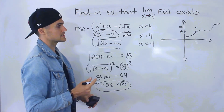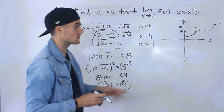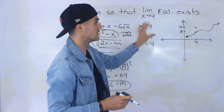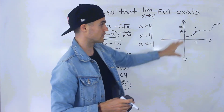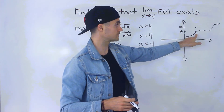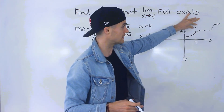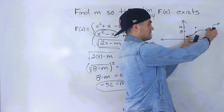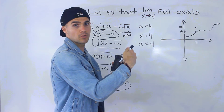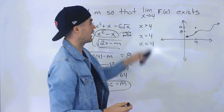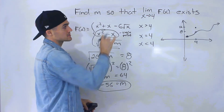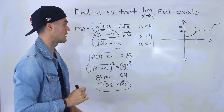One more thing: notice that this function is discontinuous at x equals 4, because there's a hole there and the function is defined at a different y value of 12. But the limit still exists because the function approaches a y value of 8 from both sides — and that's exactly what the question asks: find m so that the limit as x approaches 4 of f of x exists.